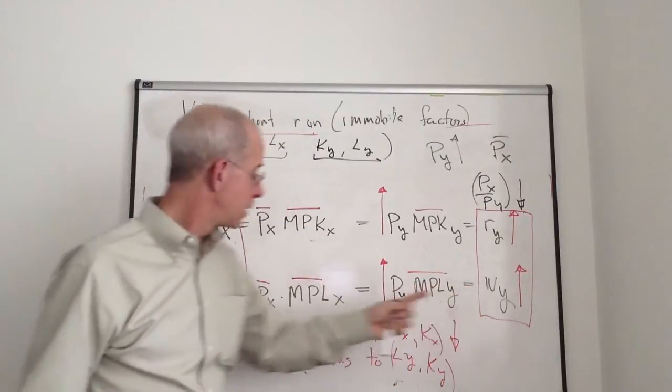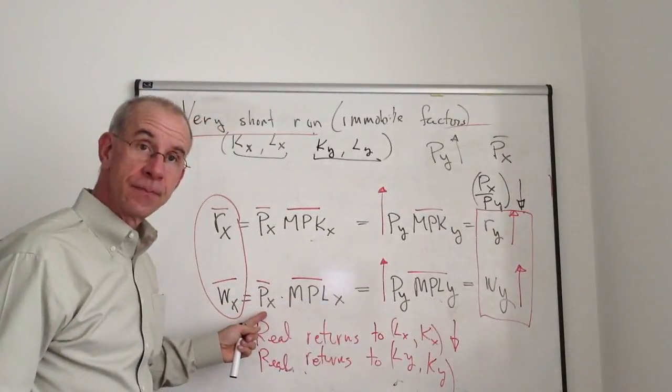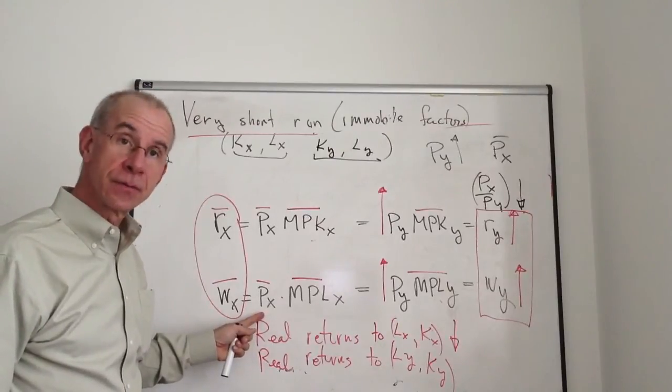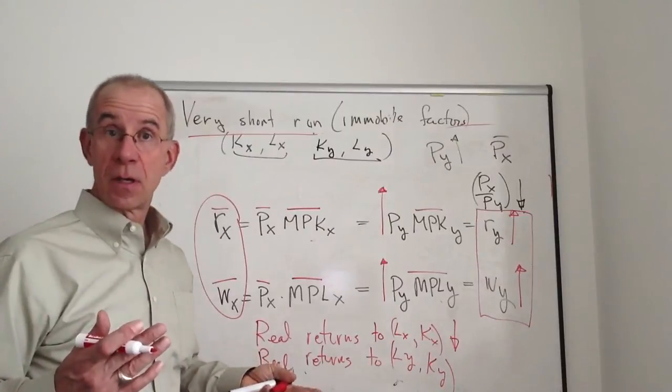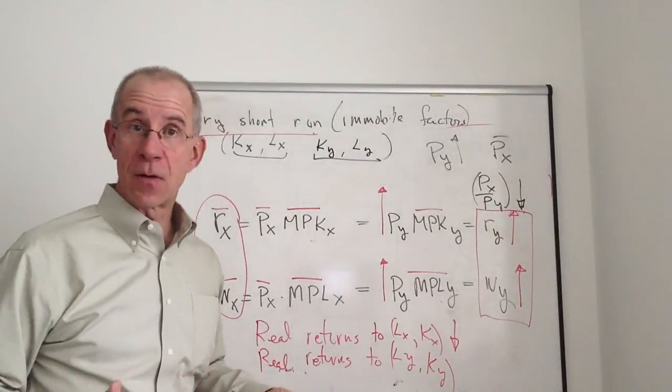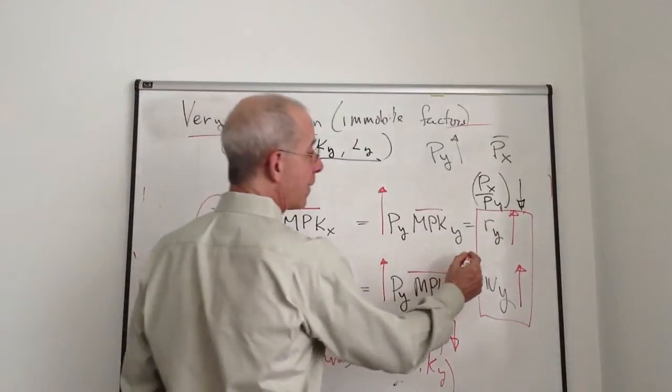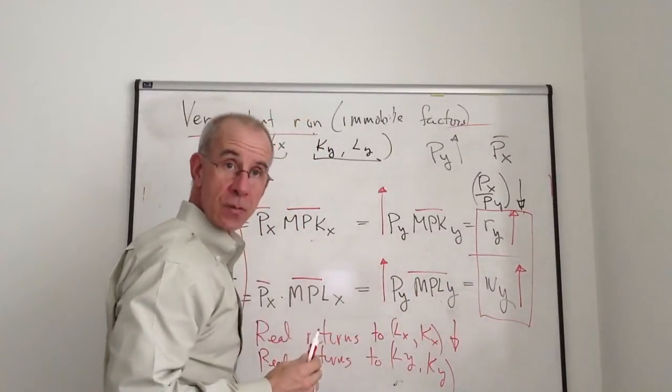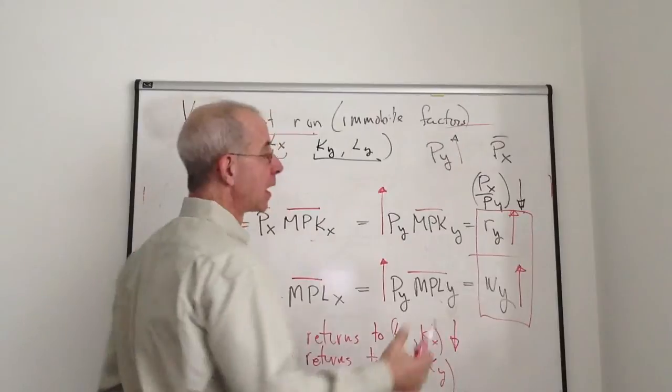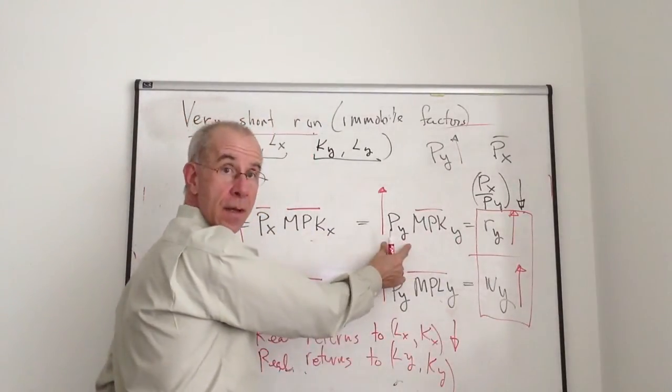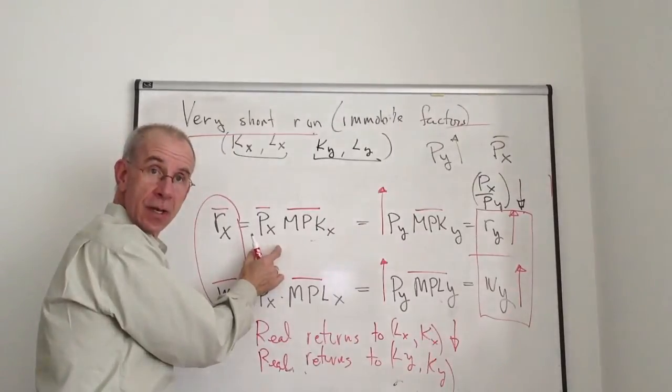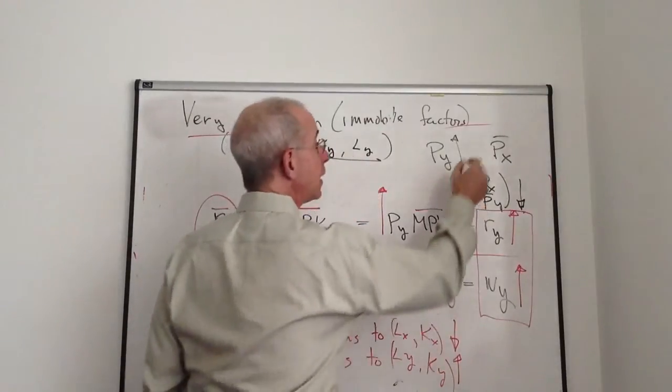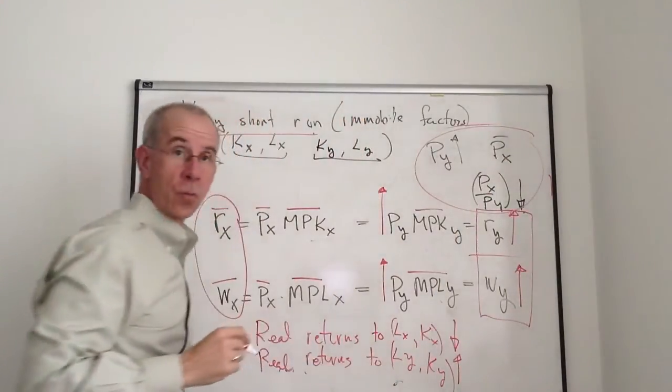But because they've had a raise and the price of X has stayed the same, they can buy more. Workers in Y can buy more of good X. So their standard of living has gone up. And the more they buy of X, the better off they are. Same way with capital. Capital's got a raise by the 10% of the price rise in Y. That's why the payment to capital went up. They can buy the same amount of Y, but they can buy more of X whose price hasn't changed. So the real returns to capital and labor in Y goes up if we've got the relative price of Y rising.